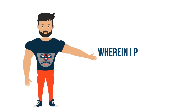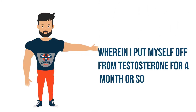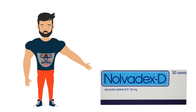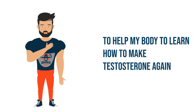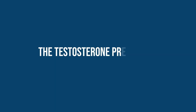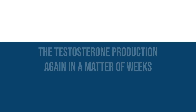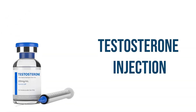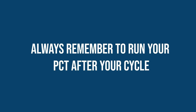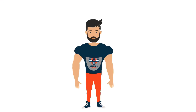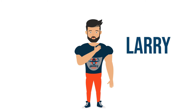In order to reduce side effects, my body has to undergo post cycle therapy, wherein I take myself off testosterone for a month or so and use Clomid, Nolvadex, and HCG to help my body learn how to make testosterone again. A proper post cycle therapy will help my body restart testosterone production in a matter of weeks. Testosterone injection has been proven to be an effective method of increasing testosterone levels. Always remember to run your PCT after your cycle. This has been your friend Larry — till the next informational video.